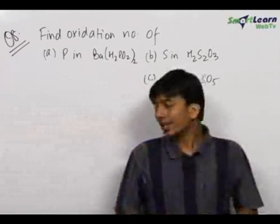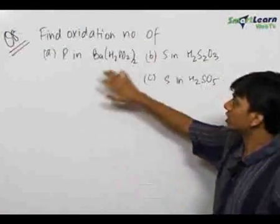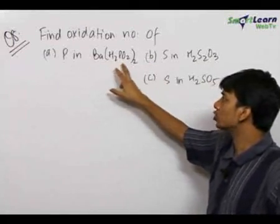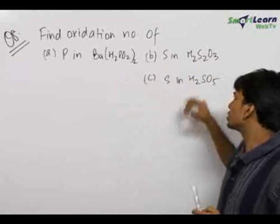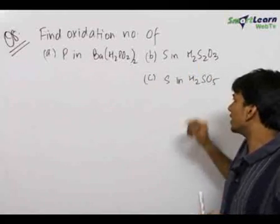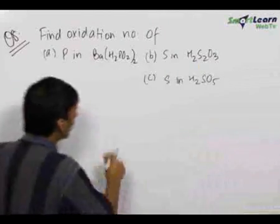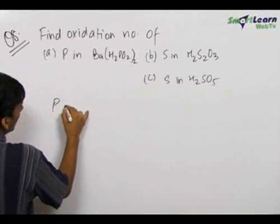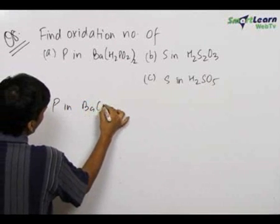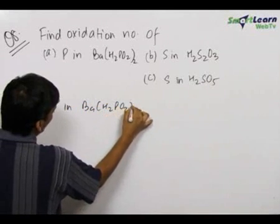This is a bit tricky question. You need to find out the oxidation number of Phosphorus in Ba(H₂PO₂)₂, Sulphur in H₂S₂O₃, and Sulphur again in H₂SO₅. So we go on with the first part first: Phosphorus in Ba(H₂PO₂)₂.